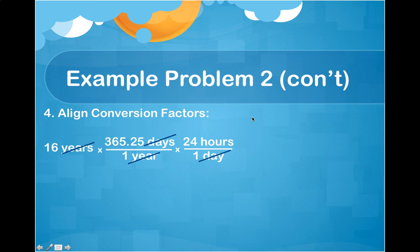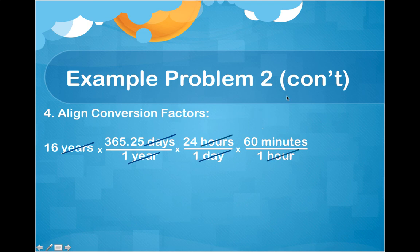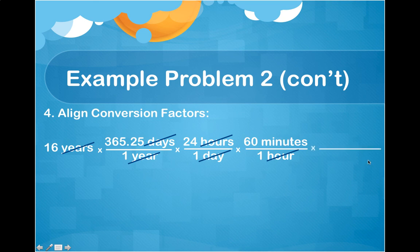Now we have hours and need to go to minutes. There are 60 minutes in 1 hour, so hours goes on the bottom so they cancel, and we're left with minutes. But the problem asked for seconds, so we make one more jump from minutes to seconds. Minutes is on top here, so minutes goes on the bottom of the next factor so it will cancel, and we're left with seconds — our desired unit.